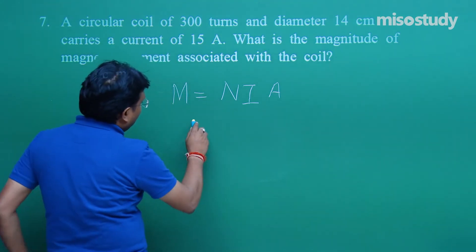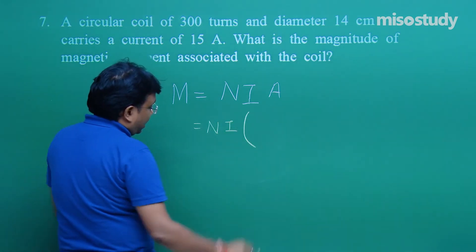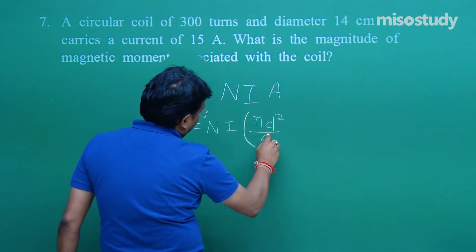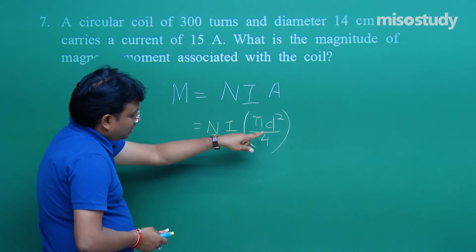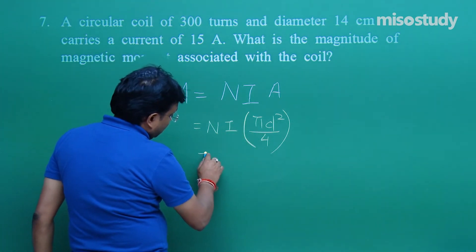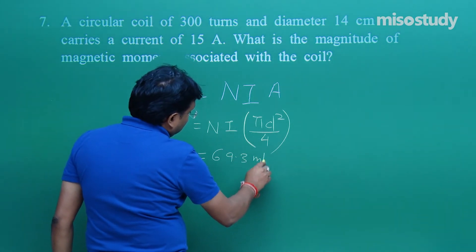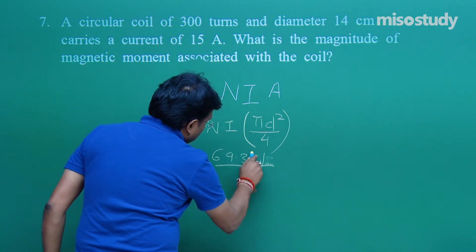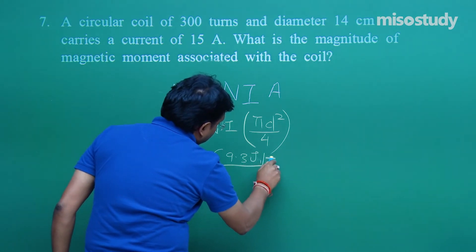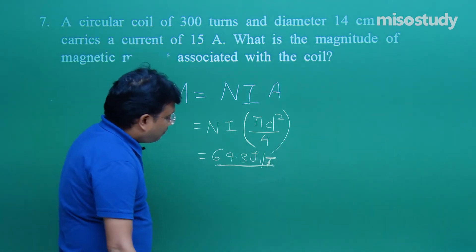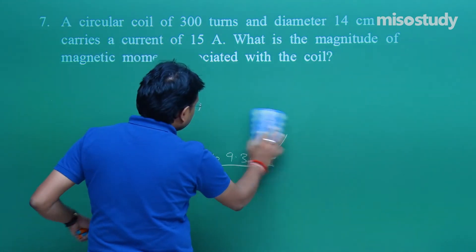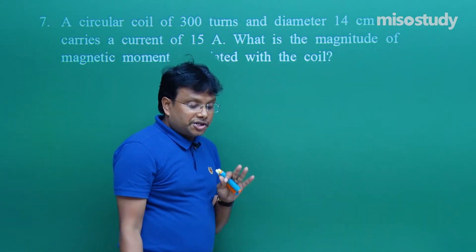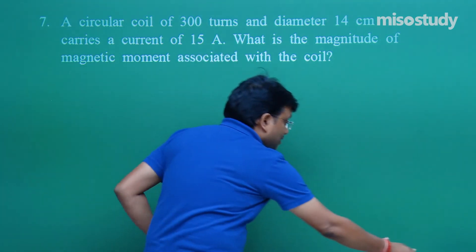Magnetic moment M = N I A, where A is the cross-sectional area, I is the current, and N is the number of turns. Substituting the values: M = N × I × (π D² / 4). Putting the values gives the answer: 69.3 joule per tesla. See the beauty — just one or two simple formulae and you get the solution. My suggestion is do not run away; read the question at least twice or thrice.